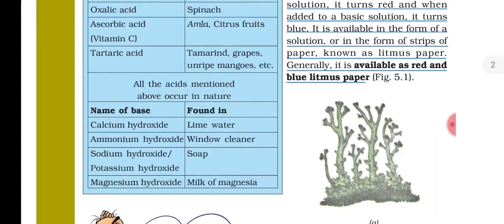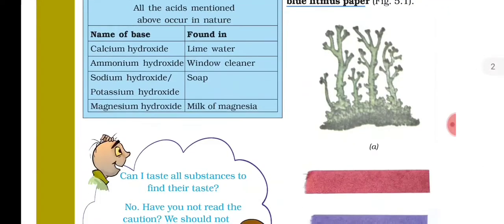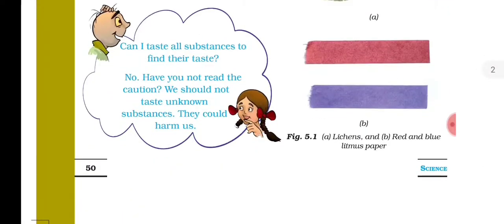Next, here we have the name of bases and where they are found. Calcium hydroxide is found in lime water. Ammonium hydroxide is used as a cleaner. Sodium hydroxide and potassium hydroxide are used in soap-making. Magnesium hydroxide is known as milk of magnesia. All these are listed in our table of acids and bases.